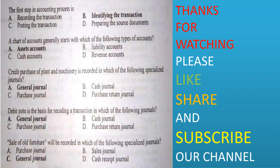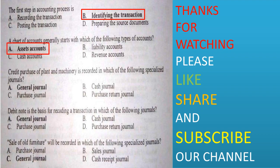The first step in the accounting process is: recording the transaction, identifying the transaction, posting the transaction, or preparing the source document. Option B is correct. A chart of accounts generally starts with which of the following types of accounts? Asset account, liability account, cash account, or primary account. Option A is correct.